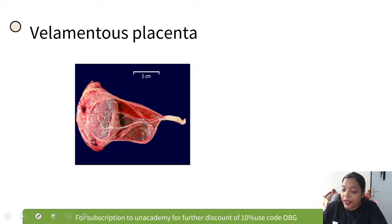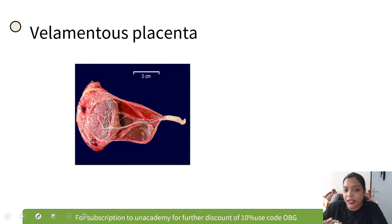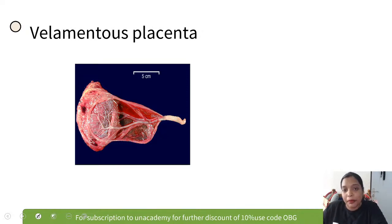This image was asked as a previous MCQ — this is velamentous placenta, where the cord is attached to the membranes instead of the fetal surface of the placenta. When attached to the membranes, it can get sheared off easily during labor, causing fetal hemorrhage. Velamentous placenta is associated with fetal hemorrhage.